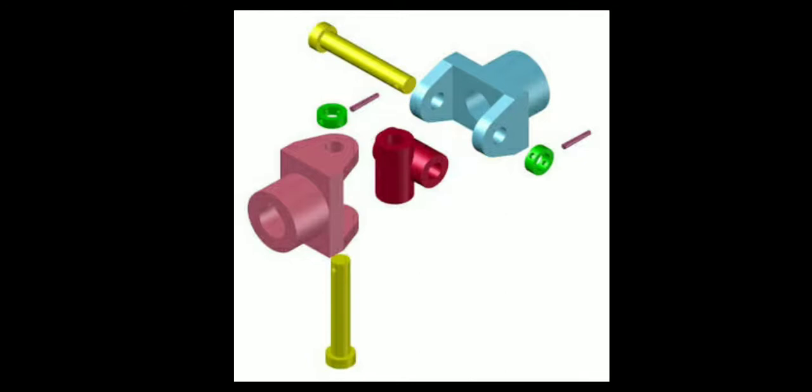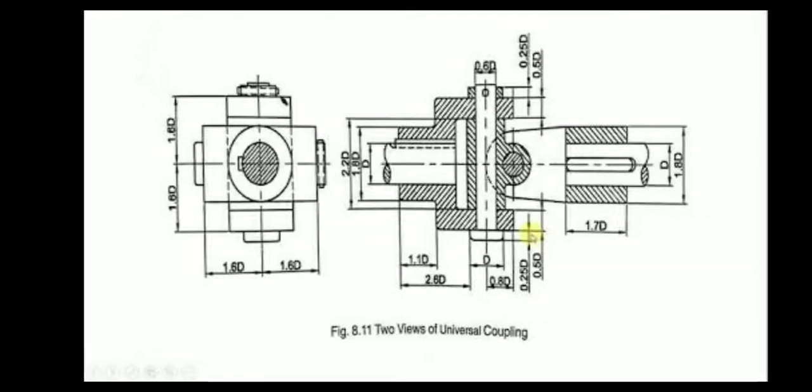So in this production drawing we have to draw the front view of the two forks as per the dimension in the question, and another is center block, and one more is pin, and another is screw pin. As you observe, this is the question as given.